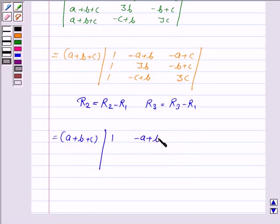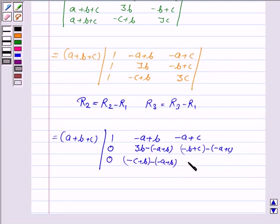We get 1, minus a plus b, minus a plus c, 0, 3b minus minus a plus b is a plus 2b, and minus b plus c minus minus a plus c, then 3c minus minus a plus c.